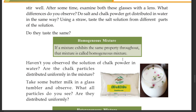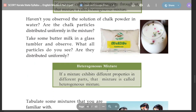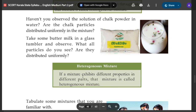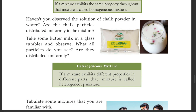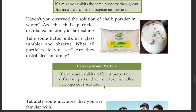Take some buttermilk in a glass tumbler and observe. What particles do you see? Are they distributed uniformly? A mixture that exhibits different properties in different parts is called a heterogeneous mixture.